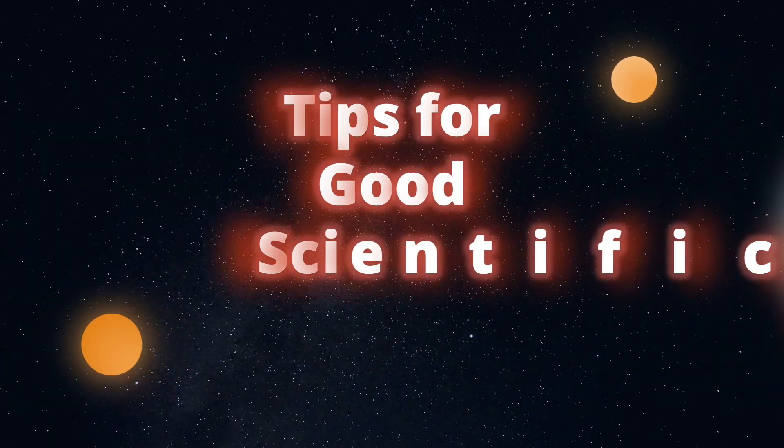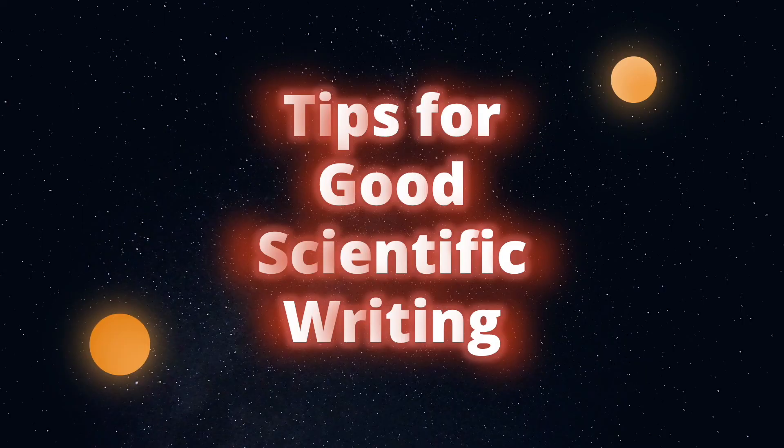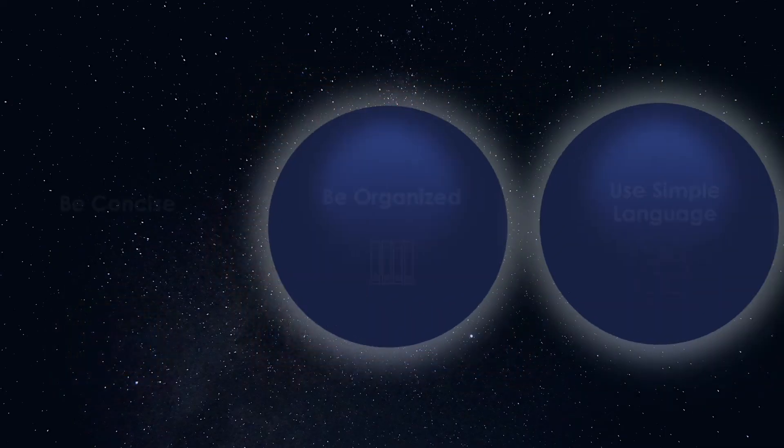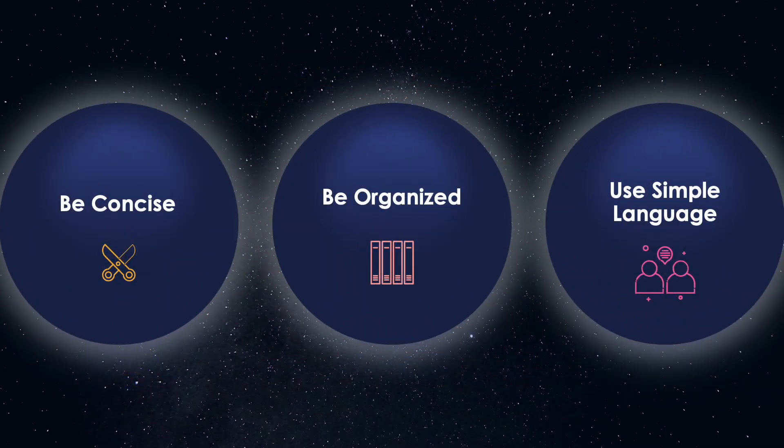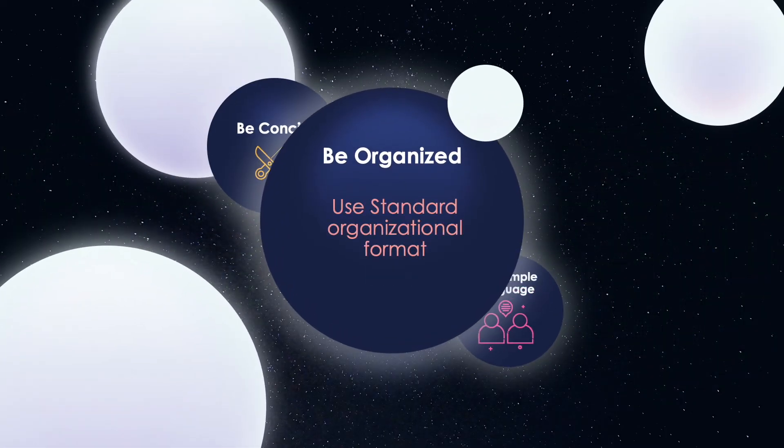So now that we've established what exactly scientific writing is, we're going to look more in depth at some tips for good scientific writing. The first tip is to organize your document according to a standard format, whether that be journal instructions to the author or a grant application guideline. That means even before you start to write, you need to fully understand what is required of you.